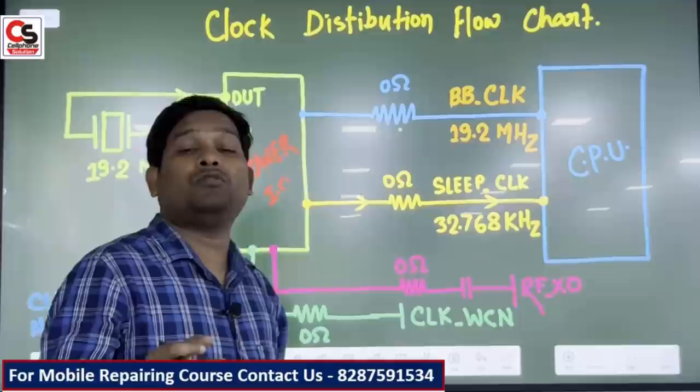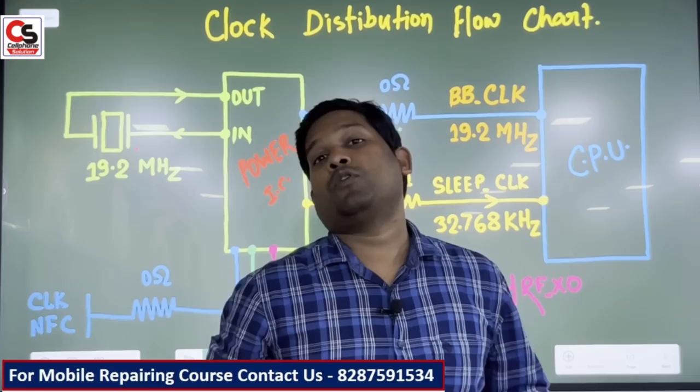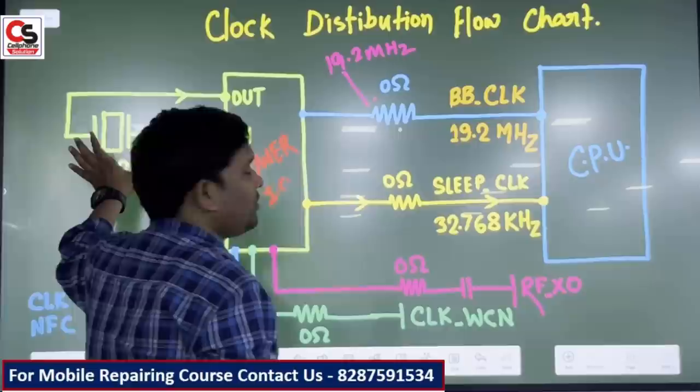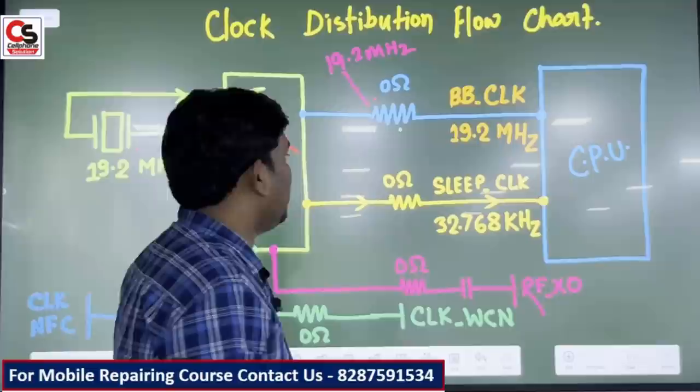If the clock is broken, we will not be able to power on the phone. In that situation, we will need to do a clock check. When we check on this resistance, you should have a 19.2 MHz clock here. If you don't get a clock here, then either your IC is broken, the crystal is dry, or it is broken.